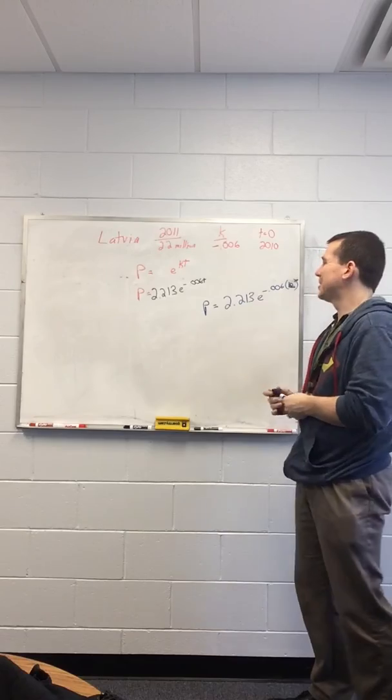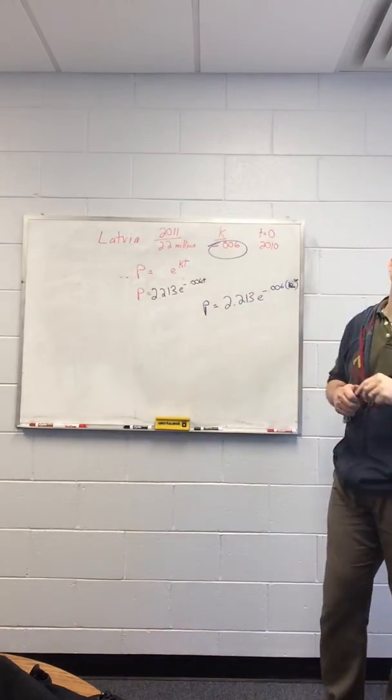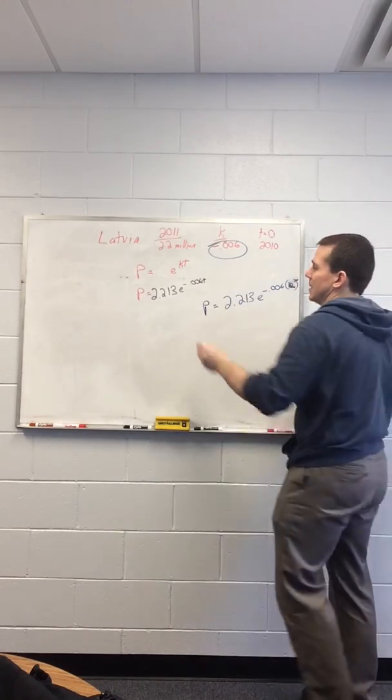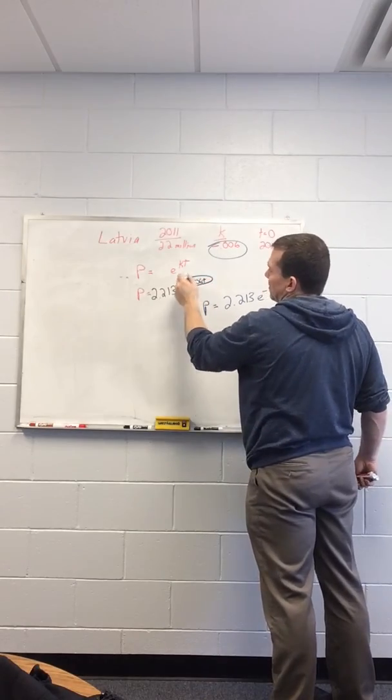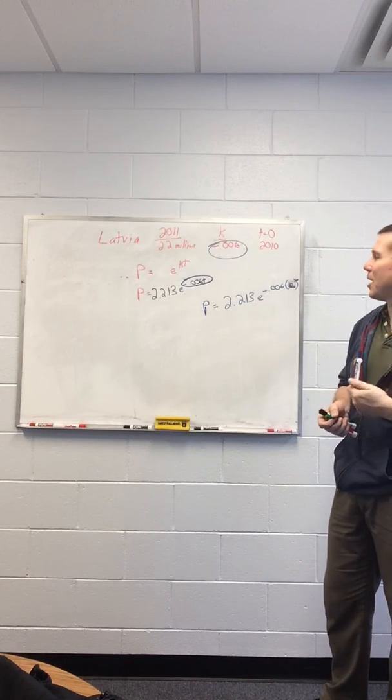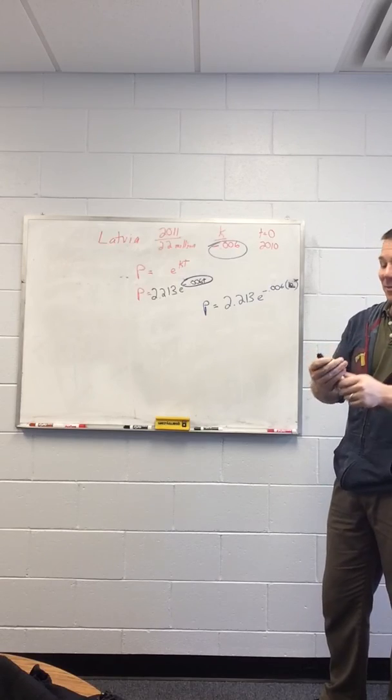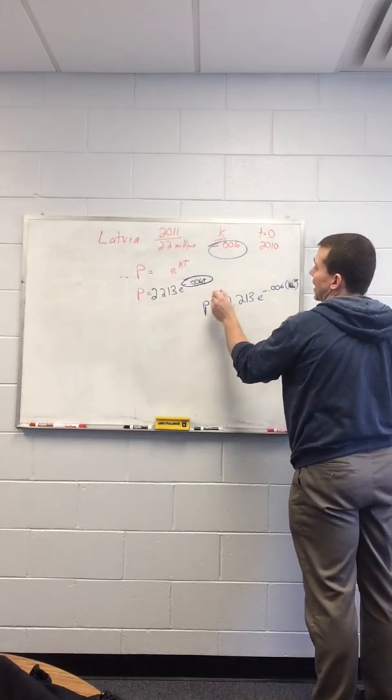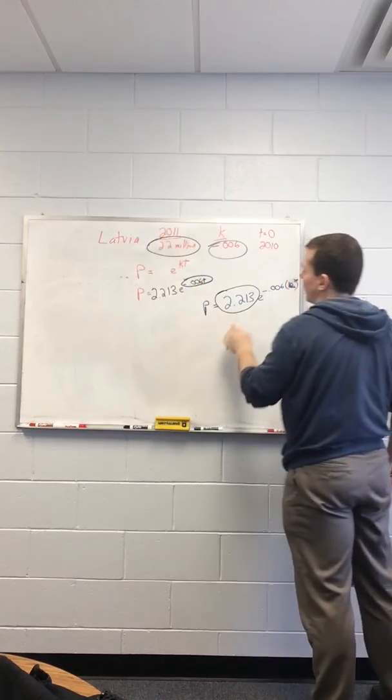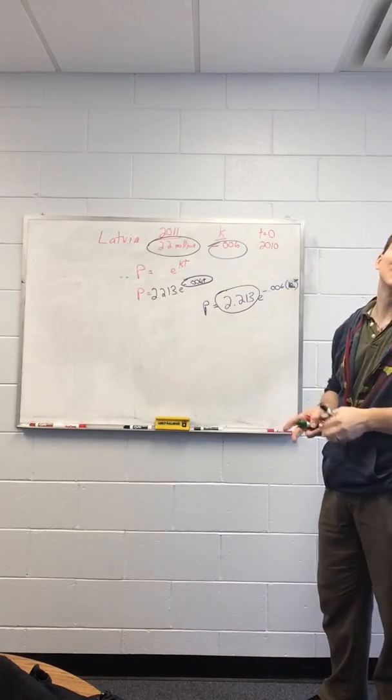The other part of the problem says, discuss what that k being negative means. And you should all understand, this is an exponential equation. If k is negative, that's a decay model, which in this case means the population is going down. For some of the other problems, k is positive, it's a growth model, the population is going up. And we can actually explicitly see that. This is our initial population in 2010. In 2011, we went from 2.213 million to 2.2 million. We went down, which makes sense. It's what we should get.